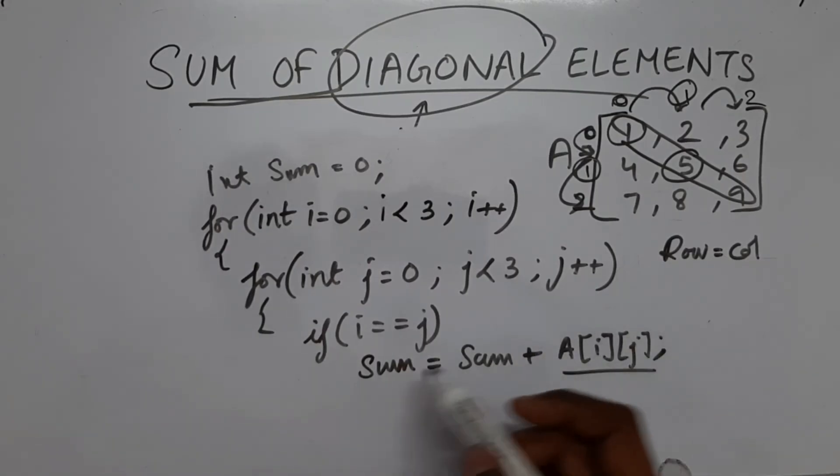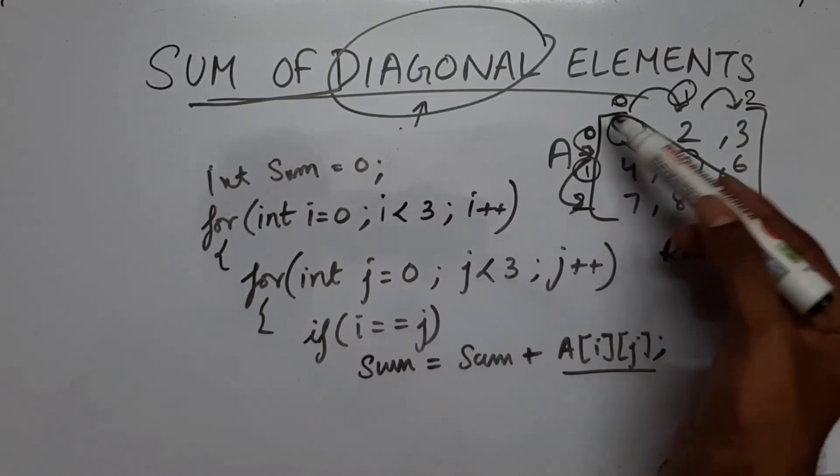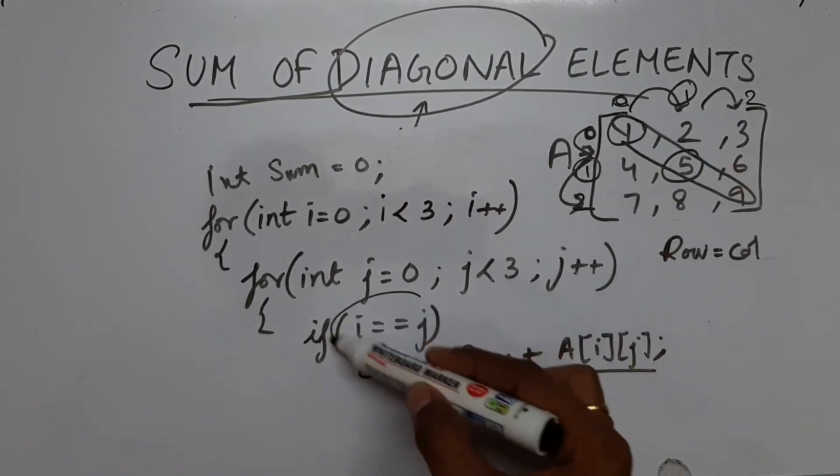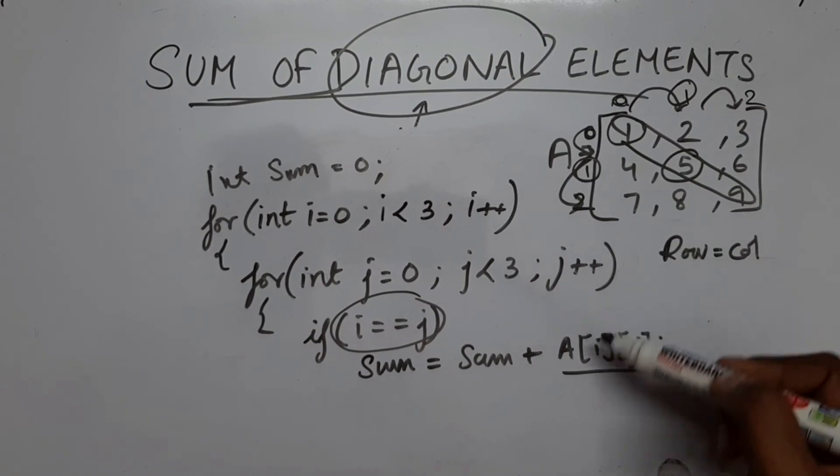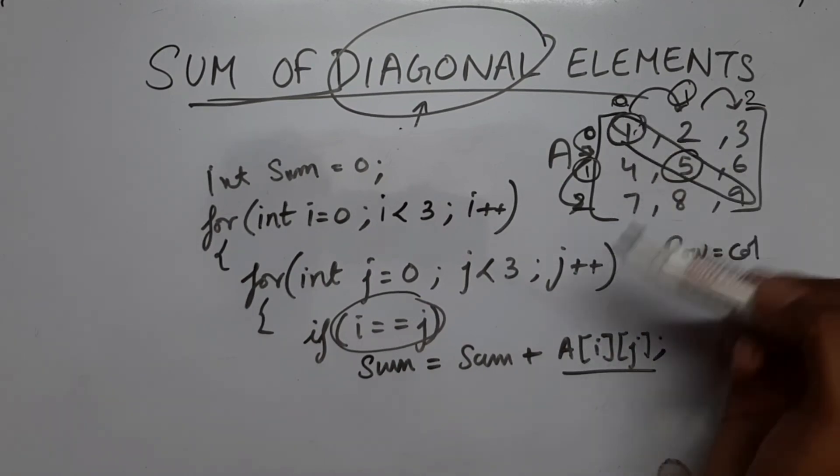I hope this is clear. So here, whenever the row index and column index is equal, I am going to add the value present at i and jth location.